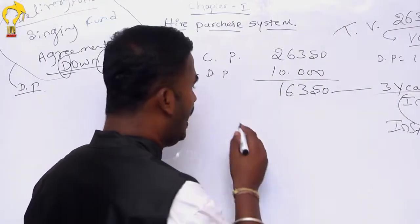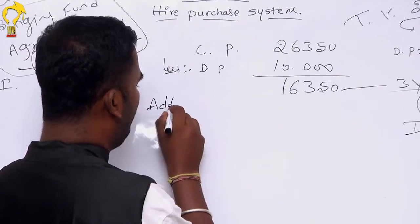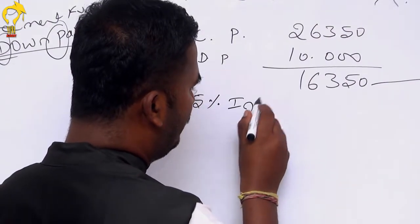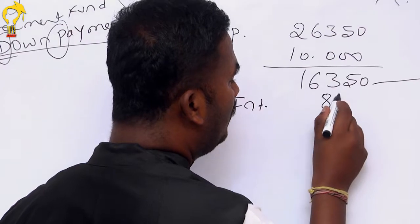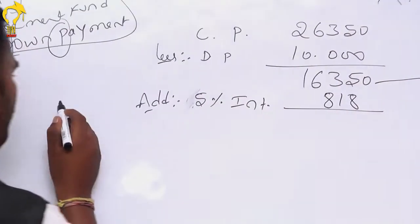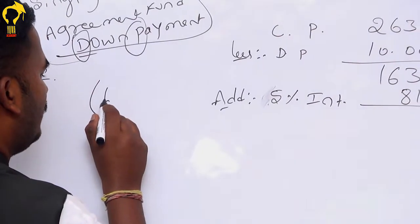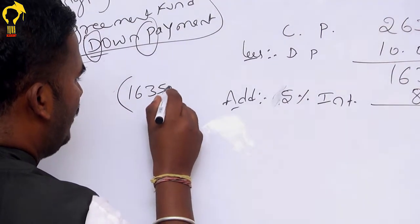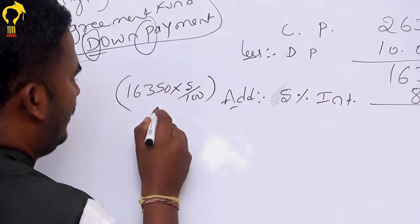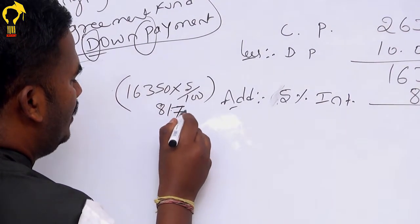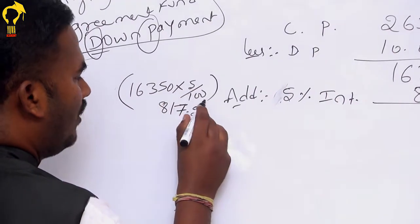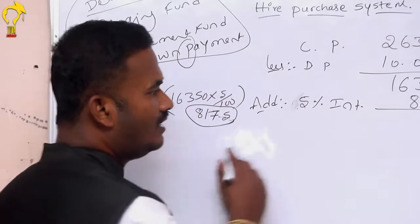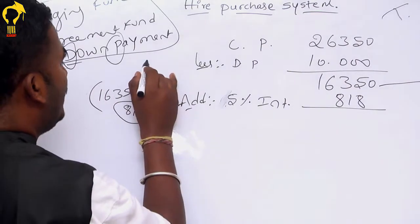Okay. Now, if you have a number of 4, you can add. But S% is 5% more than 5%. S% is 818. This is the first step. We have to go to the same set of 315 into 5 divided by 100. We have to go to the same set of 818. We have to go to the same set of 5.